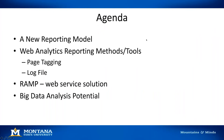Here's what I'll be discussing today. We'll start with a brief mention of terminology — basically what we're counting. Then I'll talk about the two main methods of web analytics reporting and the tools associated with them: page tagging and log file analytics. Then we'll talk about RAMP, some research data that led up to RAMP, and the big data analysis potential with RAMP.